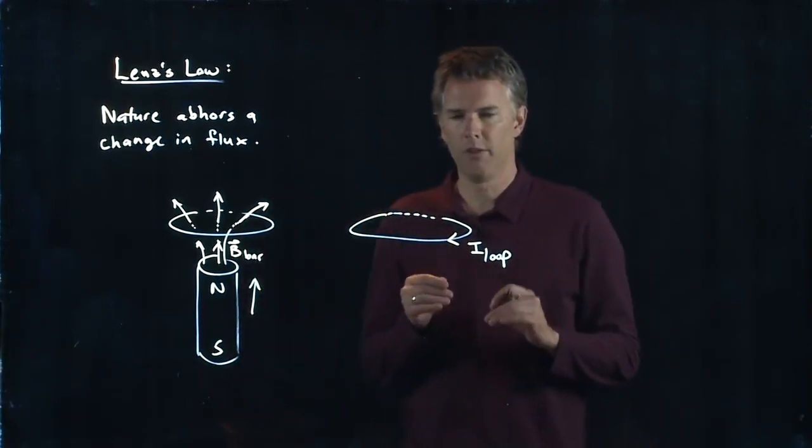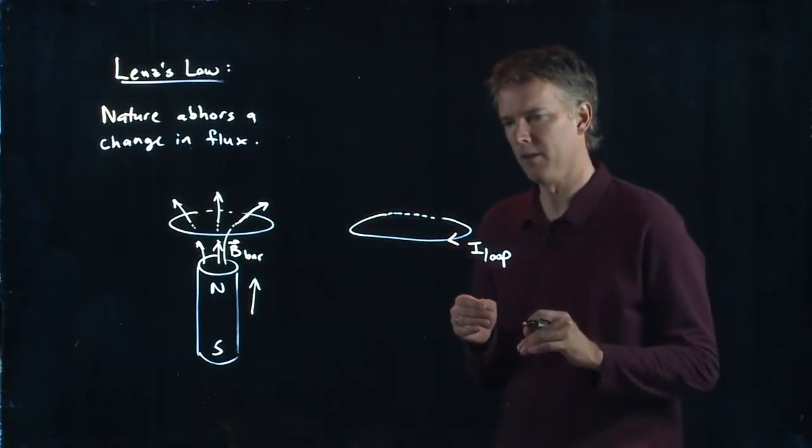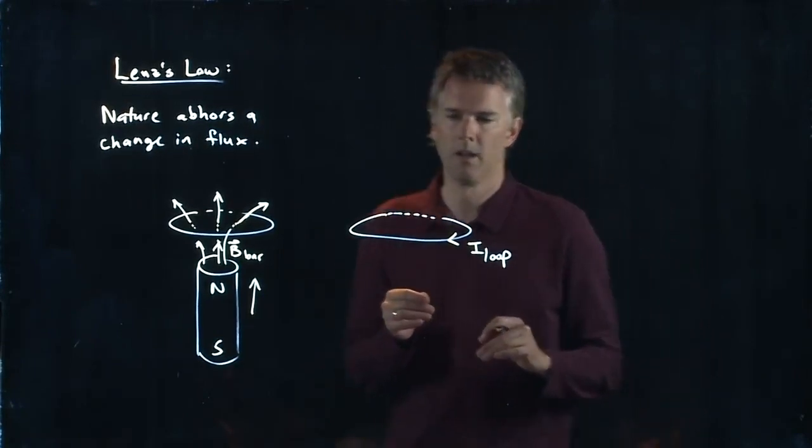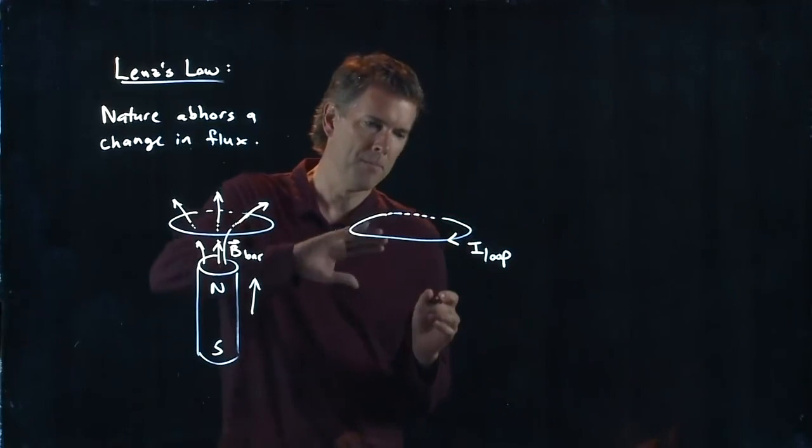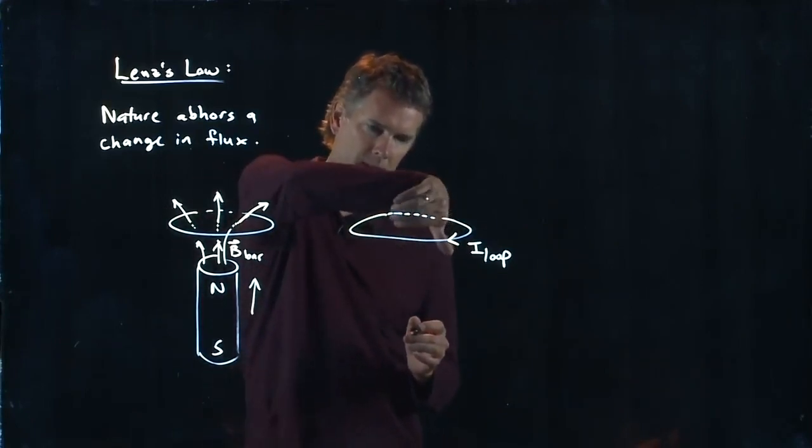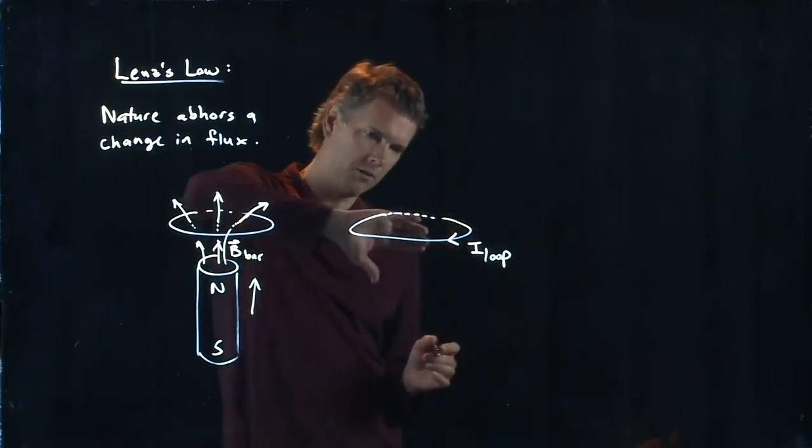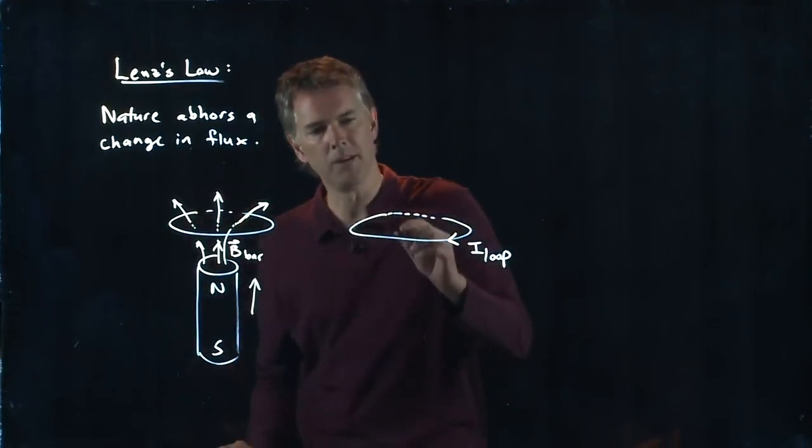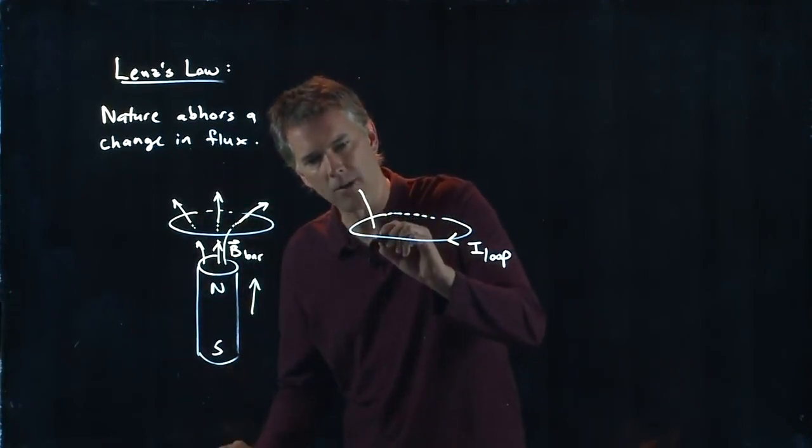So for this one, we've got a B field that is going down because the current loop is coming around like this, right? This is the direction of the current. And so the B field is in fact pointing down.